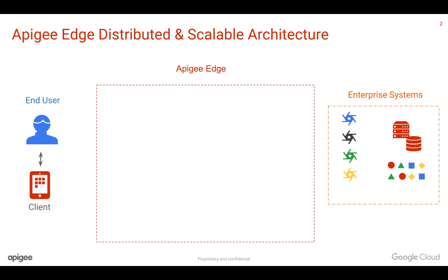Let's understand what the different components involved in Apigee Edge are at a high level. The first one is Apigee Edge UI, where you log in at apigee.com/edge and where you build your APIs. When you build APIs and create assets like key-value maps or target servers and deploy the API proxies, all that functionality comes from the management server, which is the heart of the Apigee Edge API management platform.